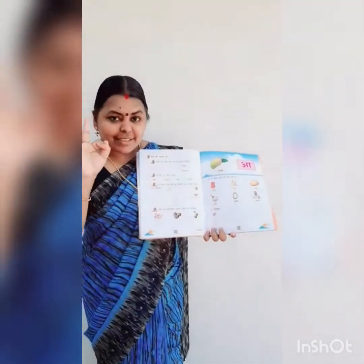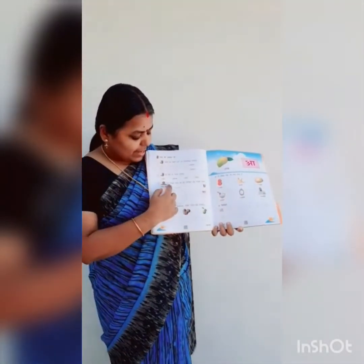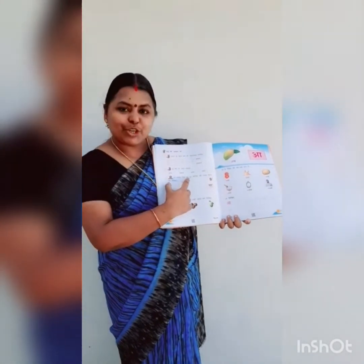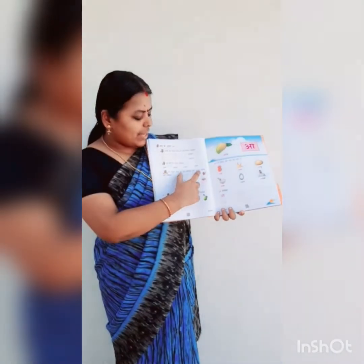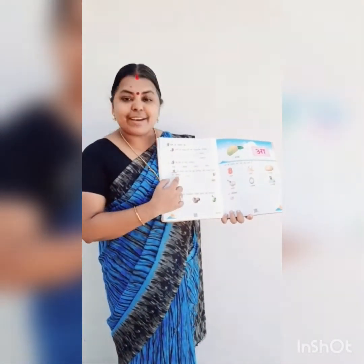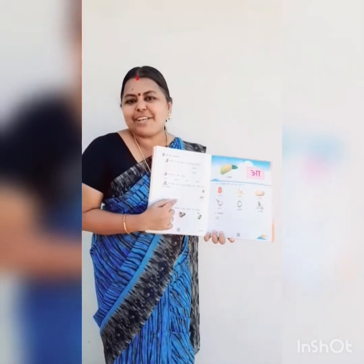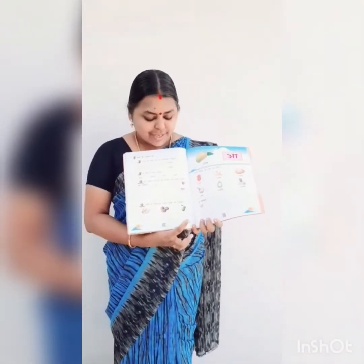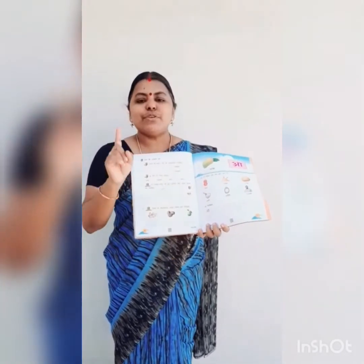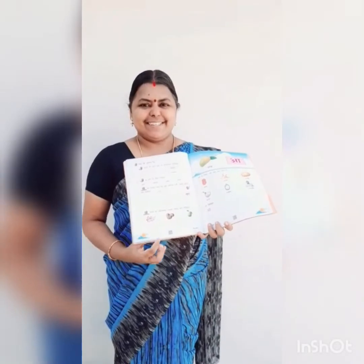Rang bhar kar chitra ko poora kijiye aur unka pehla varna likhiye — now we are going to colour this picture and write the first letter. The words are Adrak, Akhroot, Amrood. Which is the first letter? Yes, it is A. See you soon in the next module.